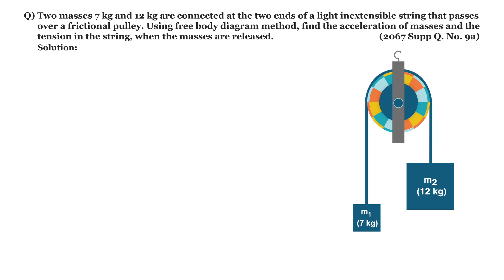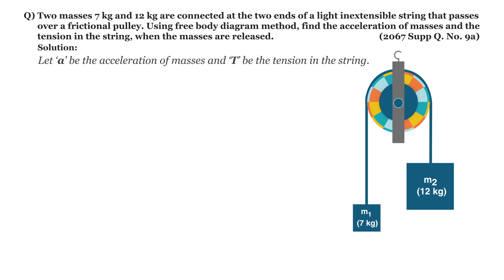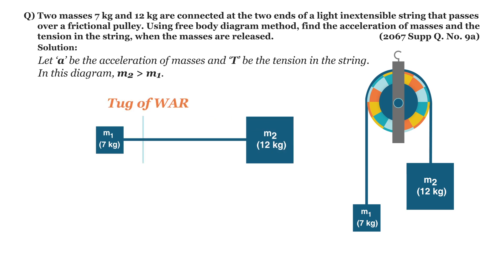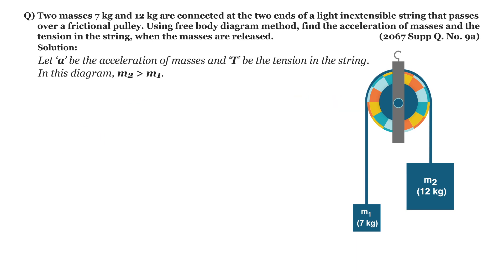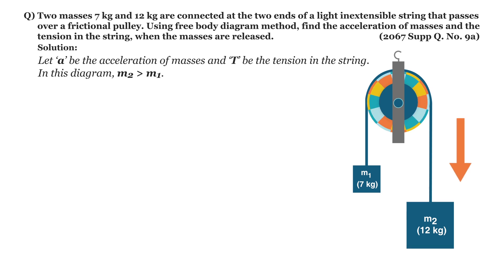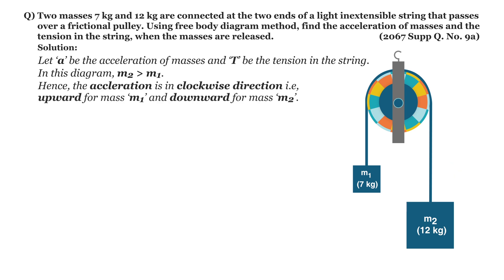Now let's analyze this problem. We are asked to find the acceleration of masses and the tension in the string. Let 'a' be the acceleration of masses and 'T' be the tension in the string. We must assign these quantities their directions using our personal intuition. In this diagram we can see that m2 is greater than m1, so m2 will win the tug of war against m1 — m2 will move downward whereas m1 will move upward when released.